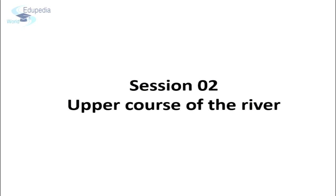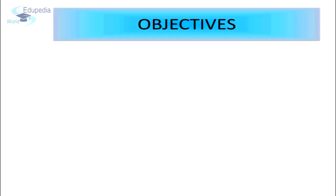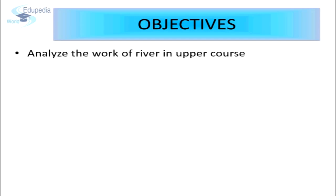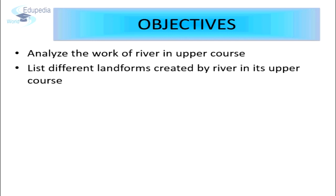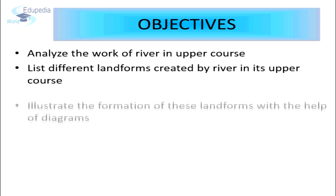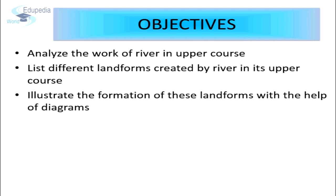In this session, we will analyze the work of river in its upper course. We are going to achieve the following objectives: analyze the work of river in its upper course, list different landforms created by river in its upper course, and illustrate the formation of these landforms with the help of diagrams.